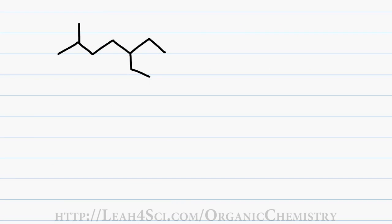Now let's look at an example that has 2 different substituents. I start by highlighting my parent chain and then numbering from the side that gives me the lowest number for the first substituent I come across.